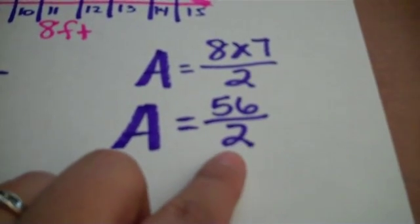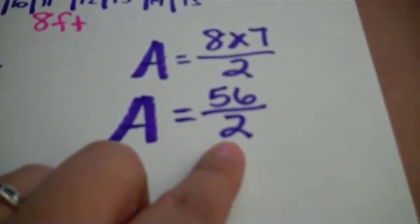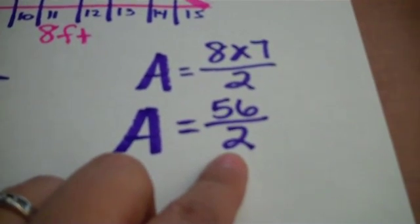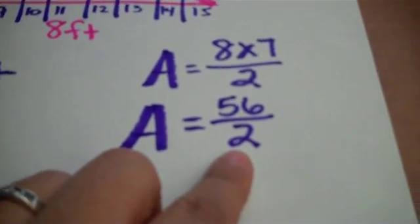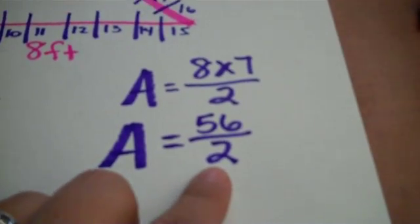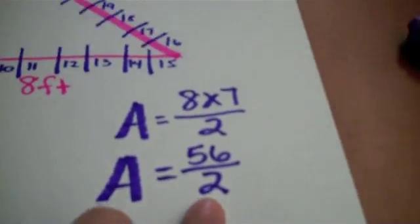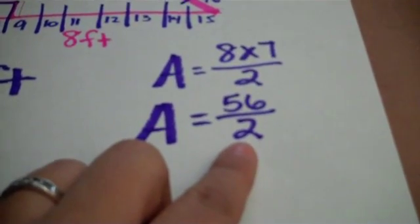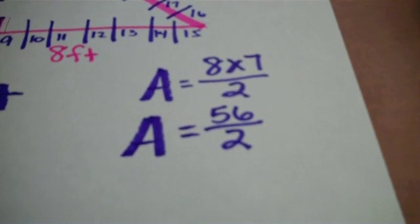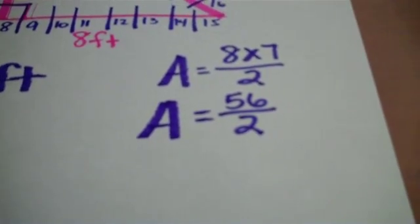Your students have seen this notation in class. They should know that 56 over 2 means 56 divided by 2. Now I'm going to go to my last and final step of solving this problem. And I'm going to actually divide 56 by 2 and figure out what my area is. When I'm finished it will look like this.